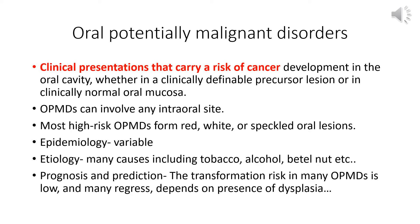Most OPMDs form red, white, or speckled oral lesions. White lesions are termed leukoplakia — white plaques of questionable risk — and once other specific conditions such as friction are eliminated, they become fit cases for biopsy to evaluate for dysplasia. Leukoplakias can be homogeneously white or predominantly white with nodular, verrucous, or red areas; those with small red areas are called erythroleukoplakias or speckled leukoplakias, while predominantly red lesions are called erythroplakia.